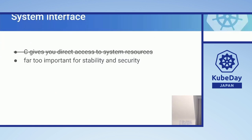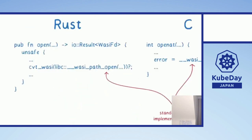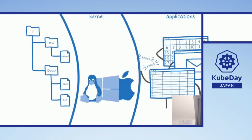To understand WASI, we need to talk about system interfaces. A common misconception is that C gives you direct access to system resources — that's false, because it's too important for stability and security. What actually happens is that applications go to the kernel to make system calls — things like open, read, write. The application asks the kernel if it can make a system call, and the kernel facilitates it. These standards are things like POSIX. All programming languages have different ways of doing system calls — you do system calls differently in C than in Python or Java.